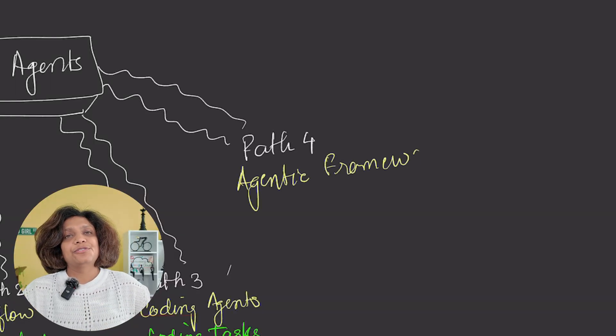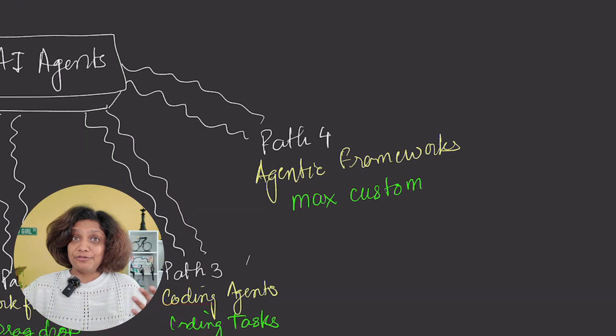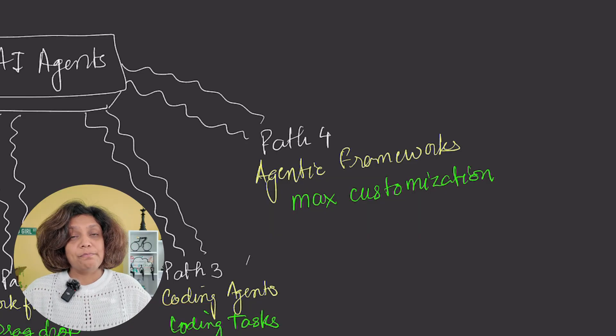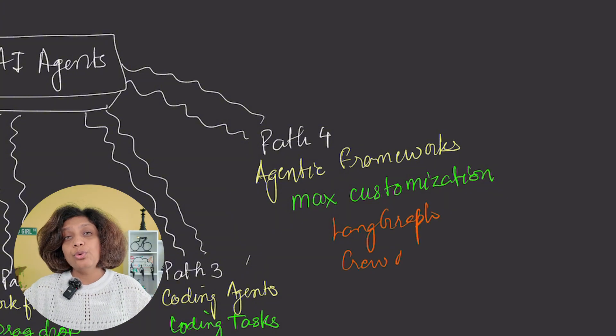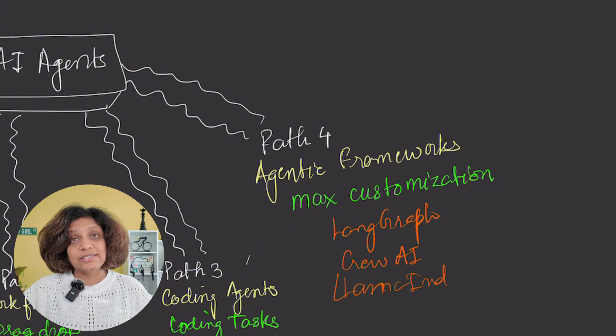And then path four is the agentic frameworks. This is the developer's professional toolkit for maximum customization and power. Frameworks like LangGraph, TrueAI, Llama Index, Google's Agent SDK provide the structures, the patterns, and the best practices to build custom, complex agents from scratch. This is for building sophisticated, production-ready agents with specialized logic and novel architecture.